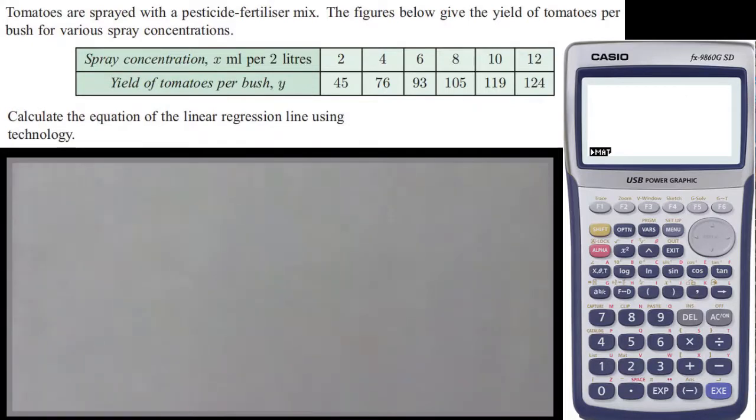We've got some numbers for that, and then you've got your dependent variable on the Y-axis if we went to do our scatter graph: yield of tomatoes per bush, as in how many tomatoes do you get from the bush when you've spread that much on it. So there's the table.